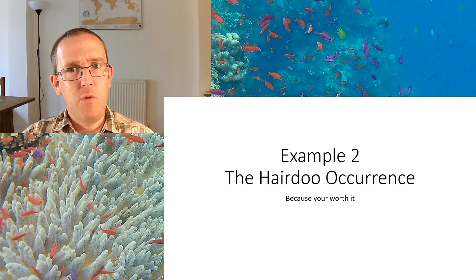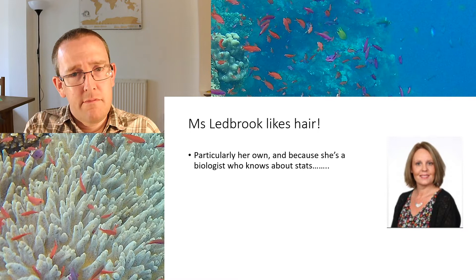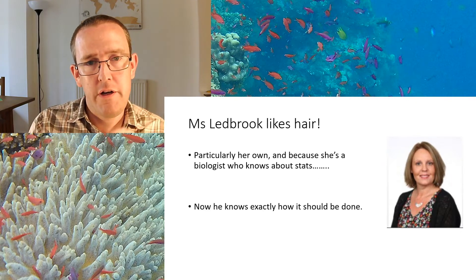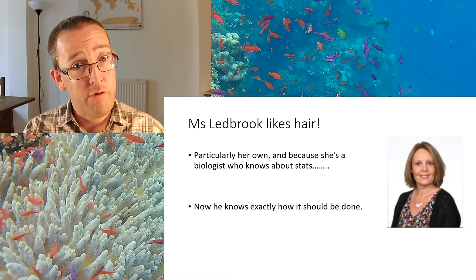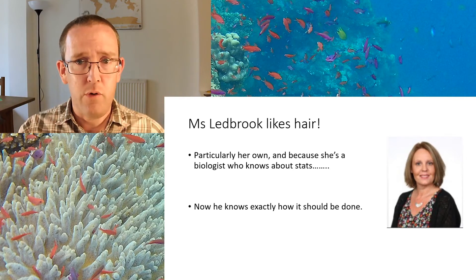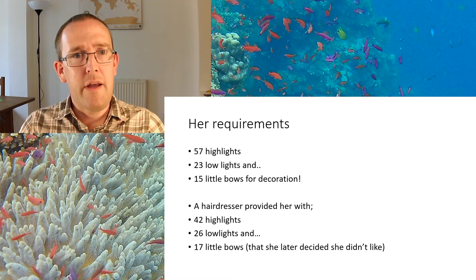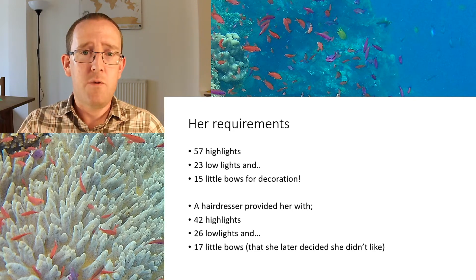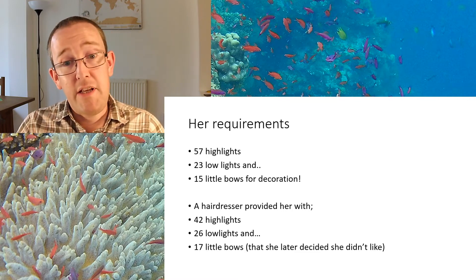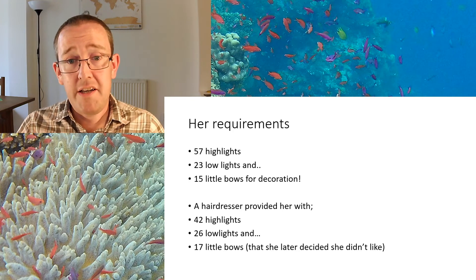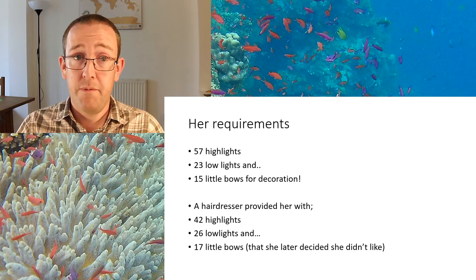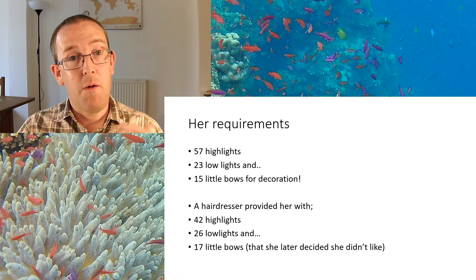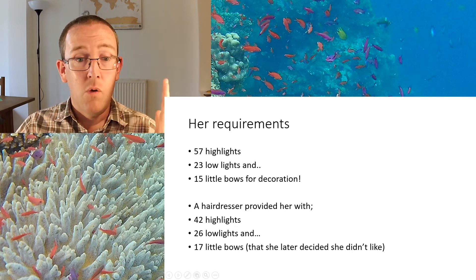Example two: the hairdo occurrence. Miss Ledbrook likes hair, particularly her own. She's an experienced and skilled biologist who knows exactly what she wants. She's the hairdresser's nightmare — very specific, laser-focused. She asked for 57 highlights, 23 lowlights, and 15 little bows for decoration. The hairdresser actually provided 42 highlights, 26 lowlights, and 17 little bows she later decided she didn't like. What is the null hypothesis for comparing these, and what test are we going to use? Write a null and identify the test.